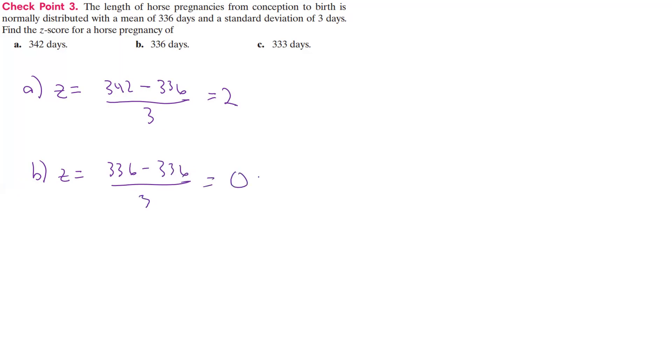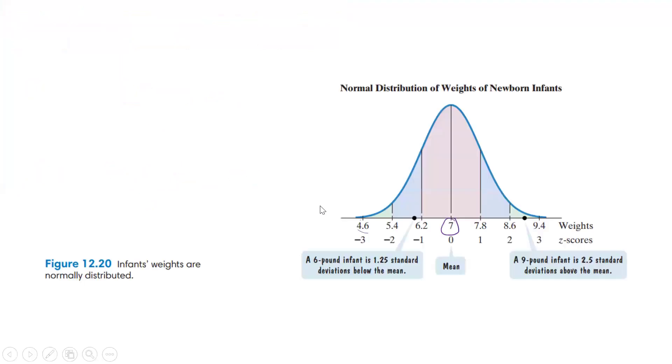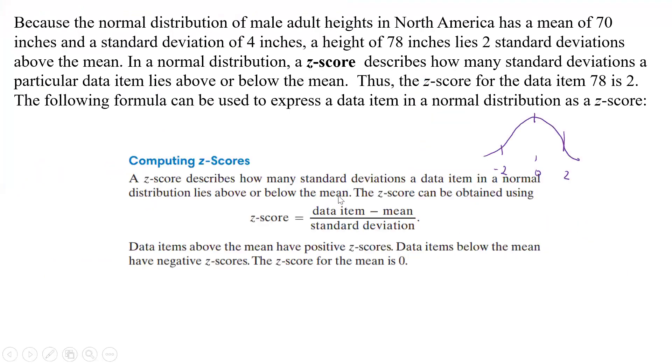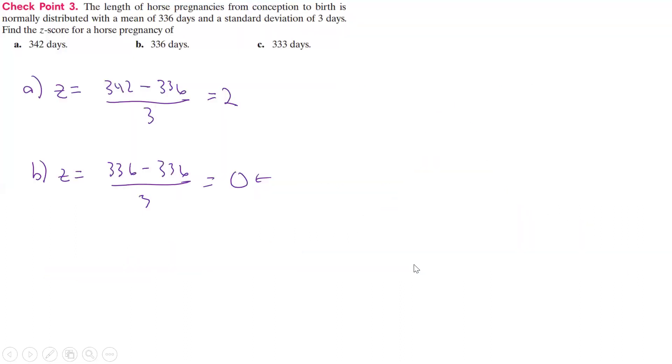That shows us what we saw, that the z-score for the mean is 0. That's what we just showed here, the z-score for the mean is 0.